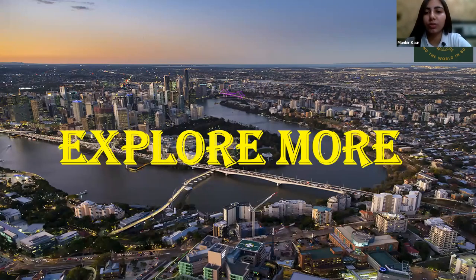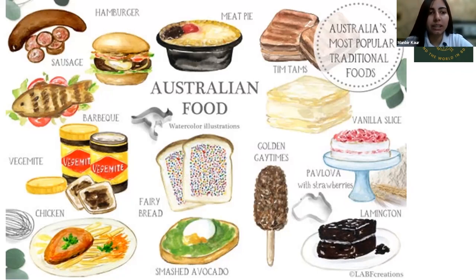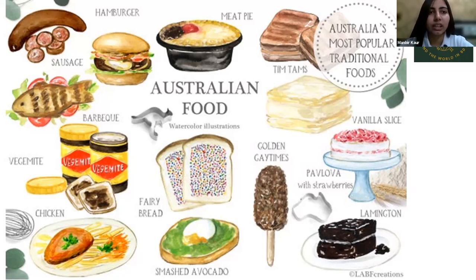We'll watch a video after this presentation. Now talking about food — this country was initially explored by various people and also had British rule, so it has a good mix of traditions. People eat chicken, and there is also a variety of British food. They eat hamburgers, meat pie, sausages, and barbecue chicken.